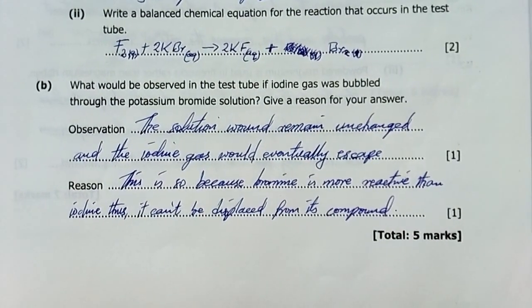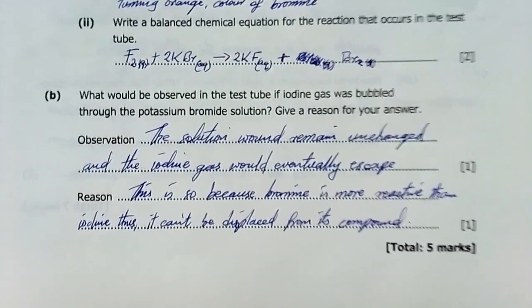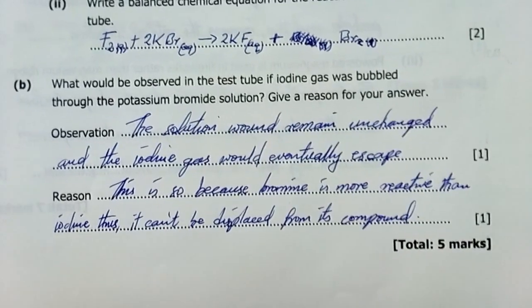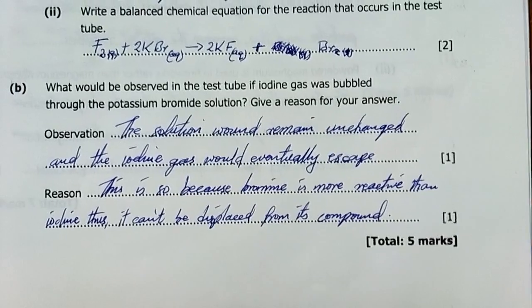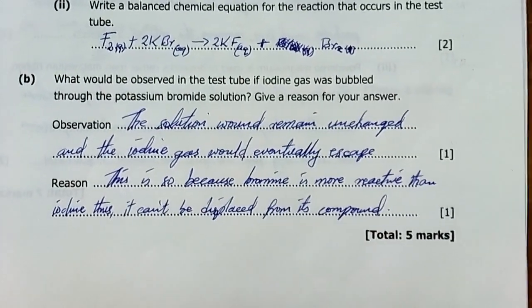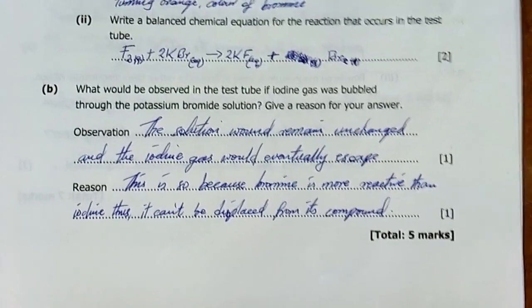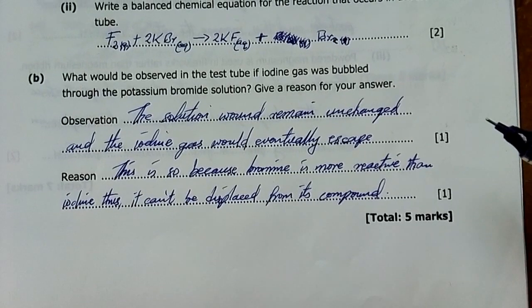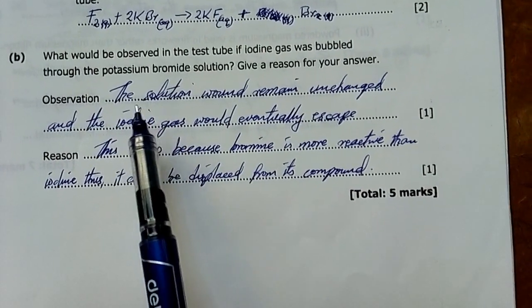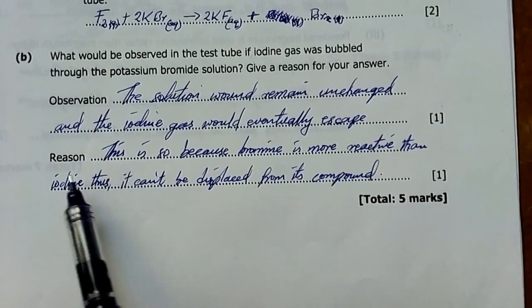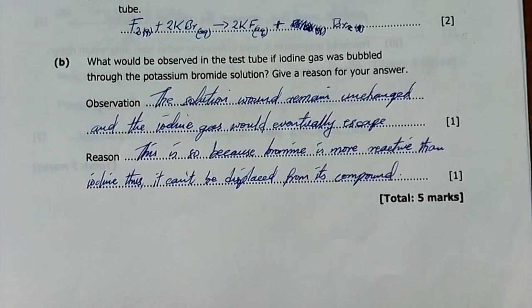What would be observed in the test tube if iodine gas was bubbled through the potassium bromide solution? Give a reason. When you look at iodine, it's below bromine in the group. Therefore, bromine is actually more reactive than iodine. Among non-metals in a group, the higher you go in the group, the more reactive the species become. Therefore, iodine won't be able to displace bromine from its compounds. The solution would remain unchanged. The reason is because iodine is less reactive than bromine.